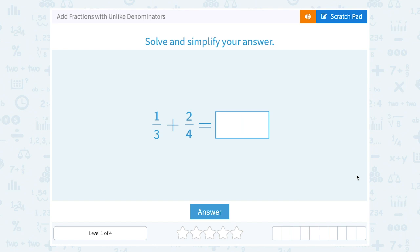Let's take a look at how to add fractions with unlike denominators. The task is to solve and simplify your answer. We have 1/3 plus 2/4.